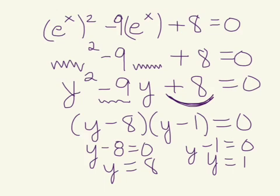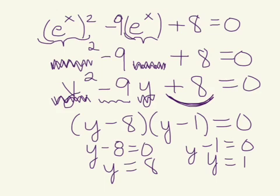But for our case, the value that was being squared and the value that was being raised to the first power was not y. The value that was being squared and the value that was being raised to the first power is e to the x. So you're really saying e to the x is equal to 8 and e to the x is equal to 1.